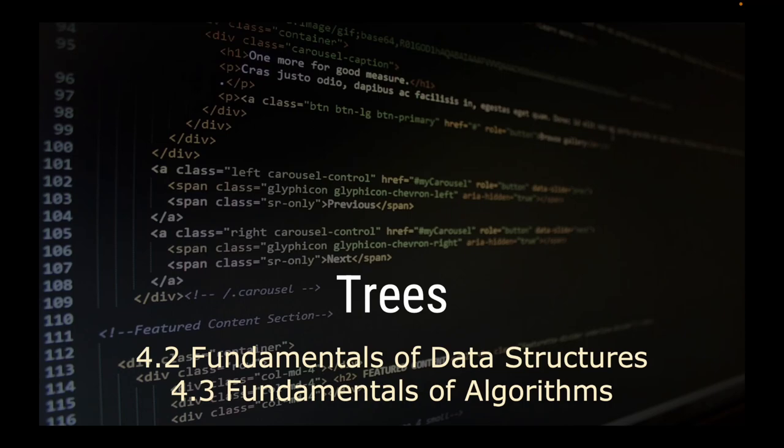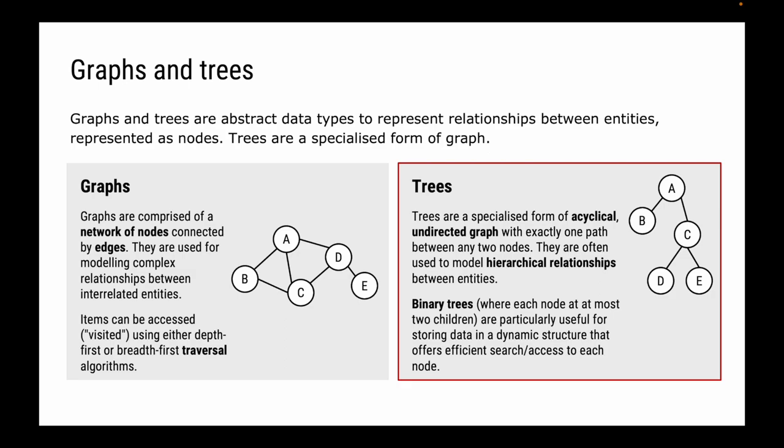Welcome to this video where we're going to be talking about the tree data structure. Trees are very similar to graphs — they're actually specialized forms of graph. They are acyclical, which means there can be no circular paths between nodes. They're undirected as well, with exactly one path between any two nodes. We often use trees to model hierarchical relationships.